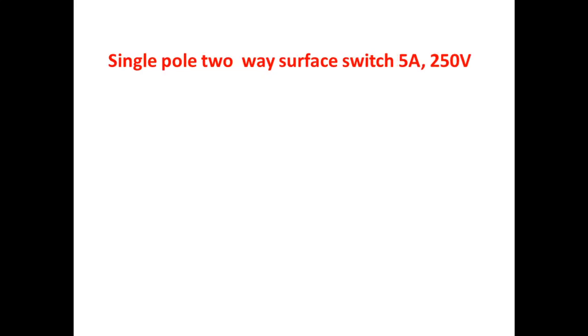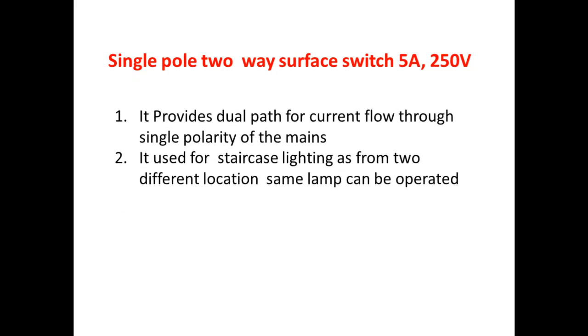Next is the single pole two-way surface switch 5A 250V. It provides dual path for current flow through single polarity of the mains. It is used for staircase lighting, as from two different locations the same lamp can be operated.